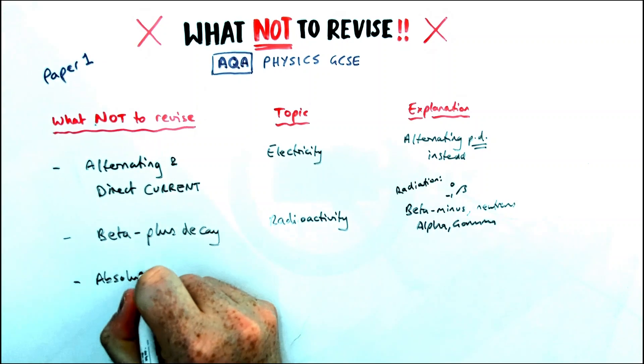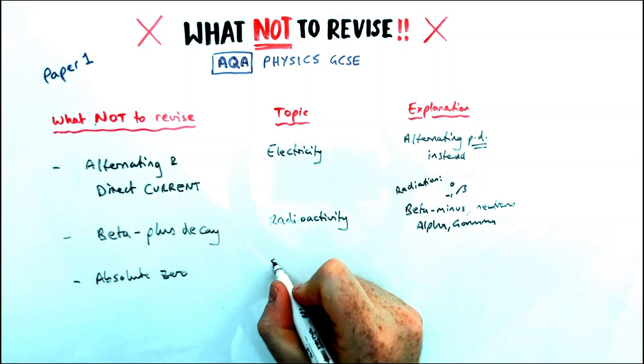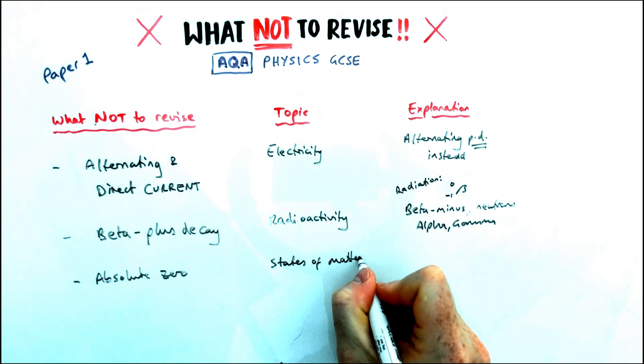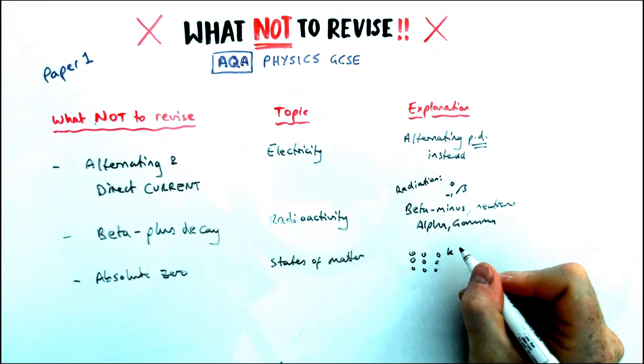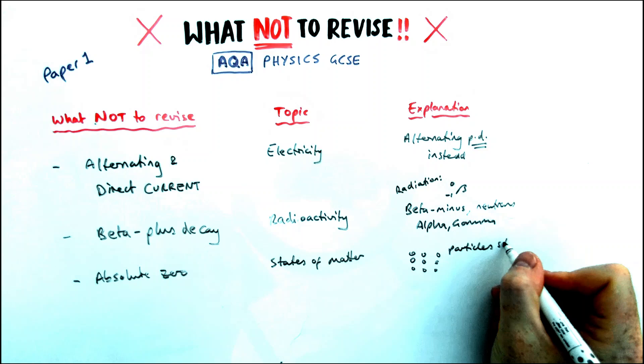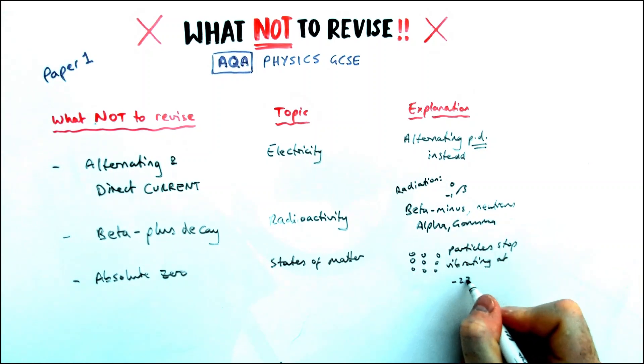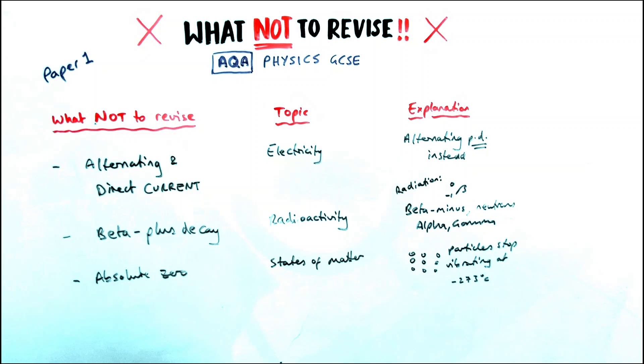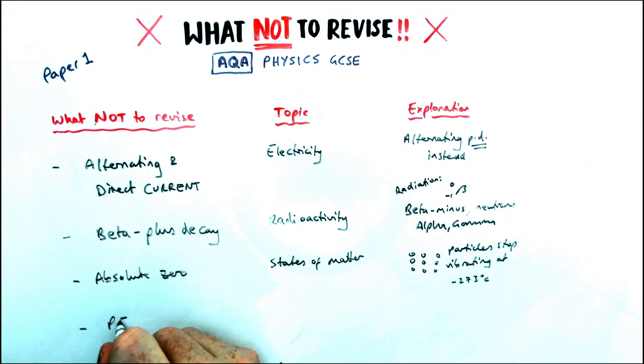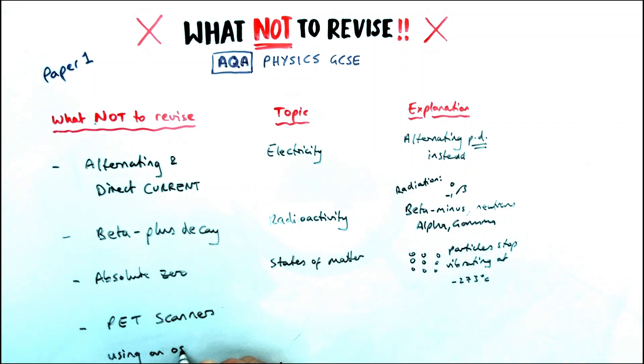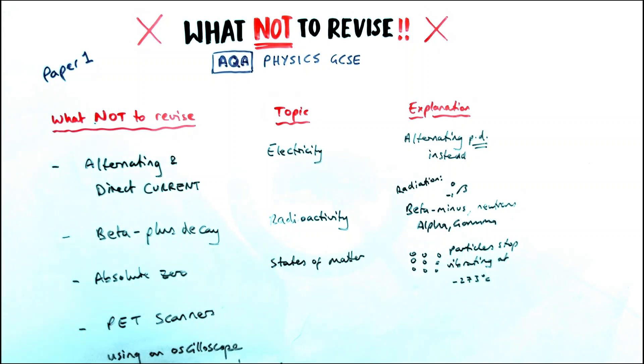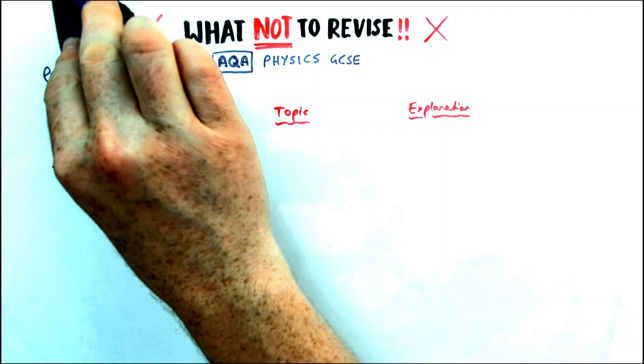Absolute zero is a really interesting thing to learn about, but if you're close to your exams, it's not worth revising because it's not on the specification. In states of matter, it means that particles, when they cool down enough, a substance of particles will stop vibrating, and that temperature is minus 273 degrees, but you don't need to worry about that for GCSE Paper 1. Also, things like PET scans using an oscilloscope, they come up on Edexcel, but they're not on AQA, so leave them alone for your revision.